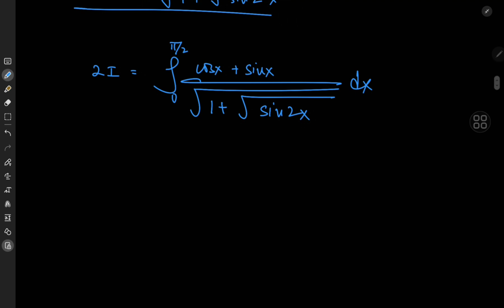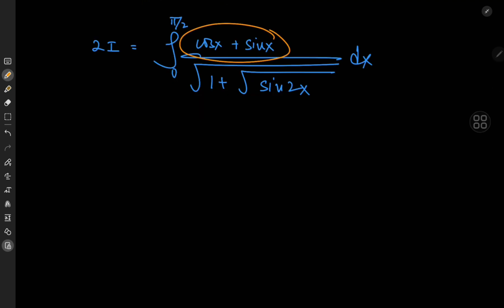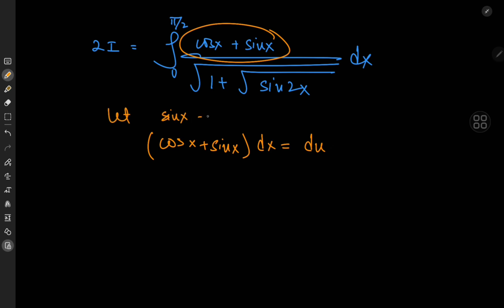Looking at the numerator gives a hint about what substitution is needed. I need a substitution that produces (cos(x) + sin(x)) dx as the differential element — that is, I need cos(x) + sin(x) dx to equal du. So the substitution I need is to let sin(x) − cos(x) = u.